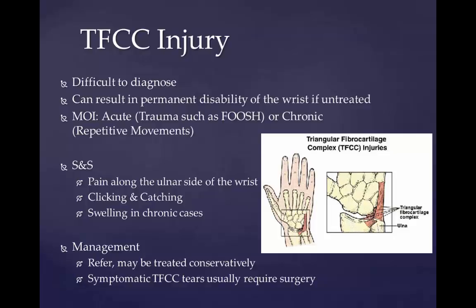Rest can help reduce the pain, and activity can make it worse, especially with rotating movements — supination and pronation of the wrist — or movements of the hand sideways towards ulnar deviation. Other symptoms include swelling, loss of grip strength, instability, and grinding or clicking sounds, also known as crepitus, which can occur during wrist activity. Treatment of TFCC injuries should include referral to a hand specialist. If symptoms become severe or a tear has been diagnosed, surgery might be required.